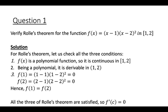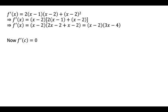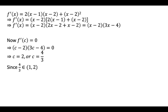Now find f'(x): f'(x) = (x − 2)(3x − 4). According to the result of the theorem, (c − 2)(3c − 4) = 0. Either c − 2 = 0 or 3c − 4 = 0, giving c = 2 or c = 4/3. But c belongs to the open interval (1, 2), so c = 4/3.